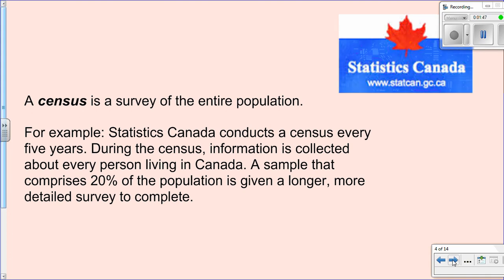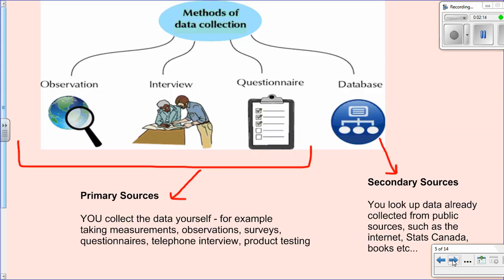Statistics Canada is one organization that does try to survey the entire population — this is called a census. They send out a survey every five years to every Canadian household, collect responses, then analyze data about income, age, religion, and other topics. They post this publicly on their website, which is how we generalize what Canadians look like in a given period — how many people are working, how many kids are in families, and so on.